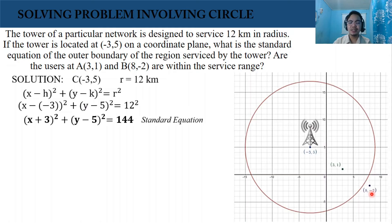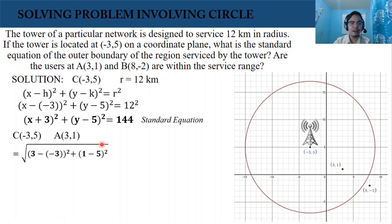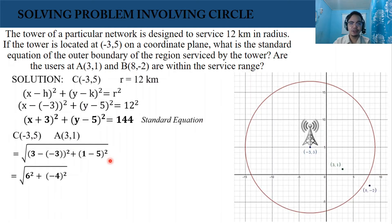We're going to use the distance formula. For point A and point C, the center, we have the center at negative 3, 5 and point A at (3, 1). Using the distance formula, we have the square root of the sum of quantity 3 minus negative 3 squared and 1 minus 5 squared — that is 6 squared plus negative 4 squared — which is approximately 7.21 kilometers. That is why point A is within the service range of our tower.